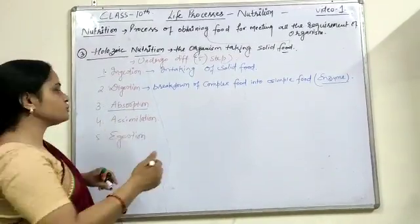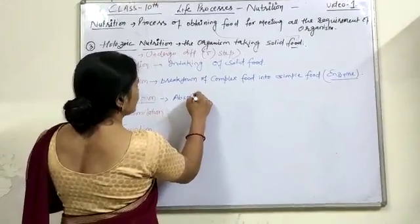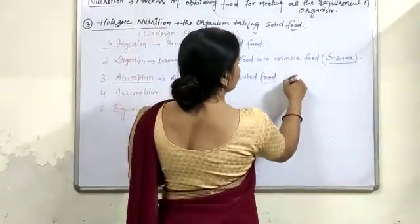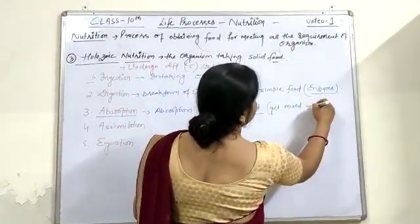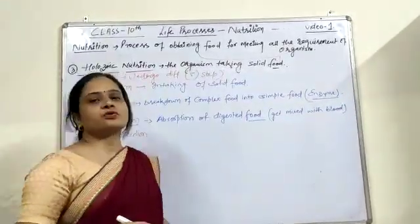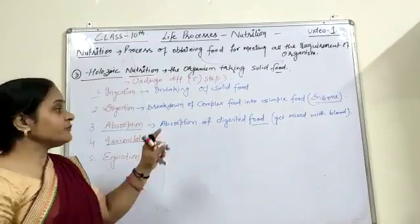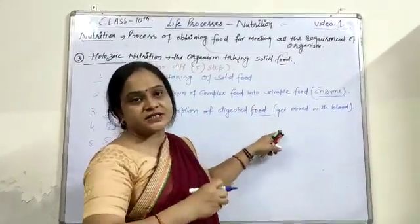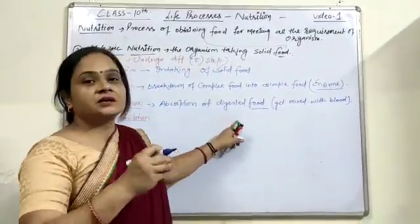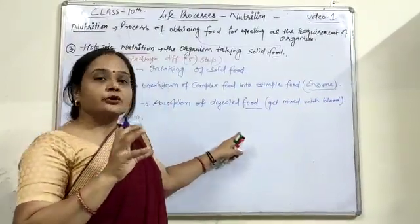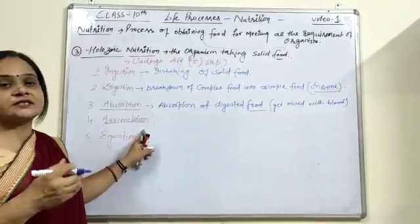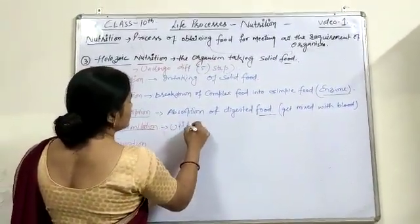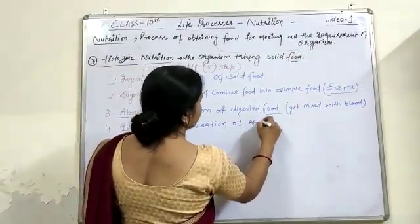Once simple food is formed, it starts absorbing — the absorption of digested food. This digested food gets mixed with the blood and is transported to various parts of the body. Assimilation is when the food mixed with blood is transported to various parts; each part receives the digested food, where it is respired in the presence of oxygen, releasing energy utilized by cells in different metabolic processes. Assimilation is the utilization of absorbed food.